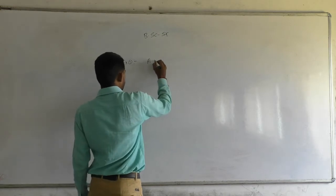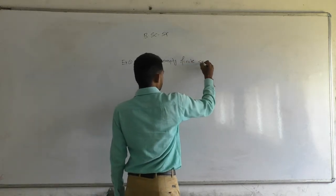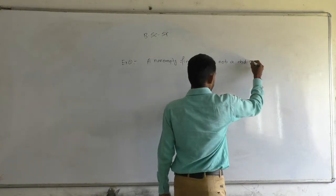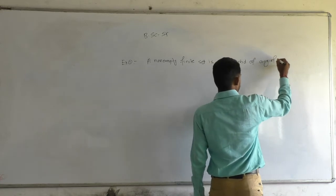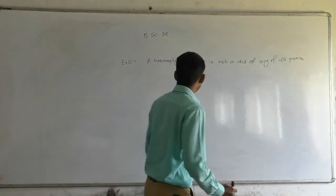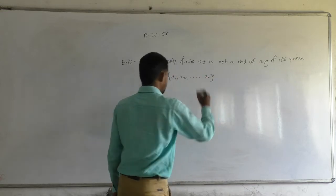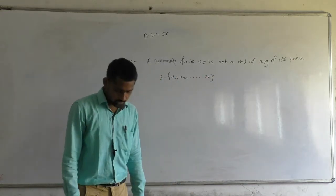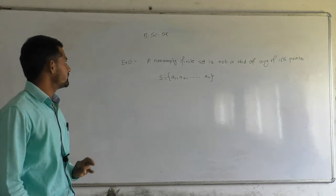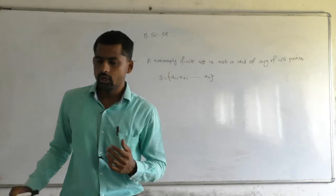First example: a non-empty finite set is not a neighborhood of any of its points. Consider a finite set S = {a1, a2, ..., an}. This is a finite set containing n elements. We have to show that S is not a neighborhood of any of its points.